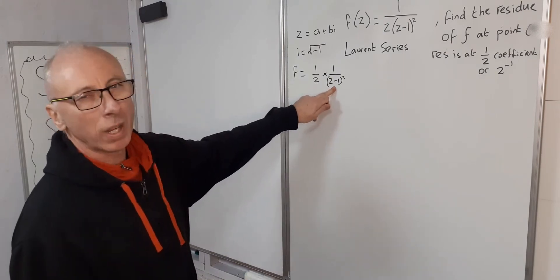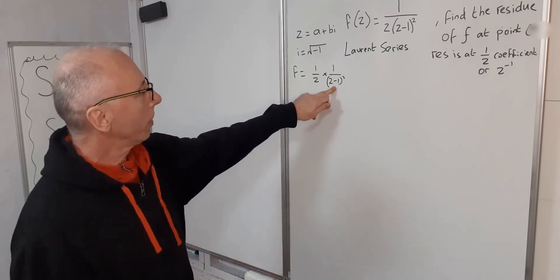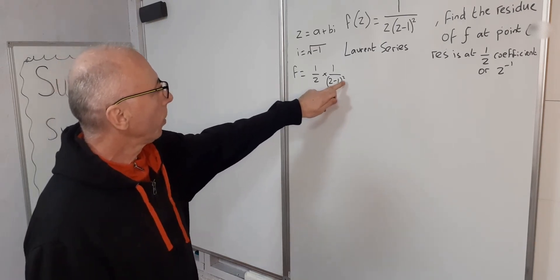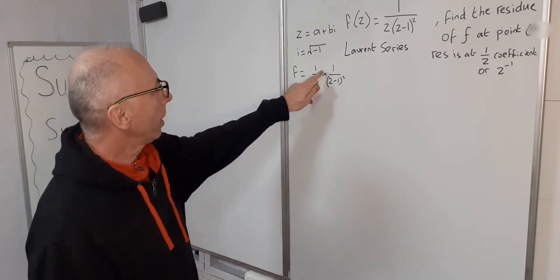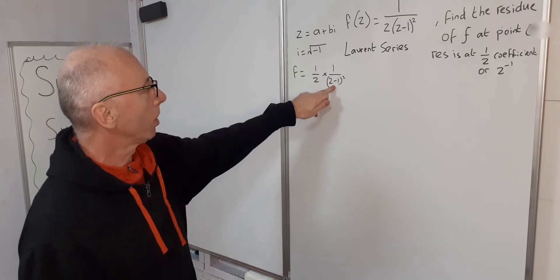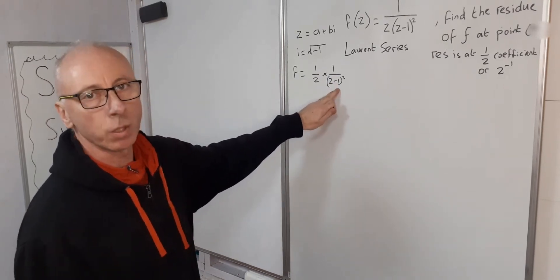1 over z minus 1 squared we don't really know a Taylor series for that, but what we do know: if we can get this squared on this one and then just this is 1 over z minus 1 or something like that, then we can be fine.